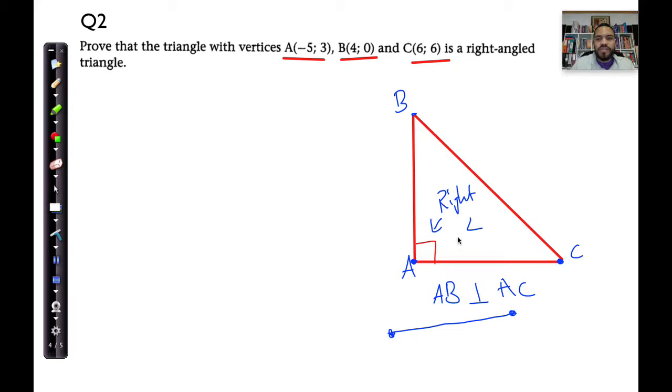We already know something about gradients that are perpendicular. If we multiply their gradients, for example, MAB multiplied by MAC, if they're equal to negative one, we can conclude that these are perpendicular lines. So let's do that for the vertices with A and B. Let's find the gradient of AB, and let's find the gradient of AC. I'm going to do this in red.